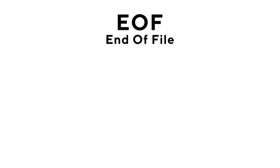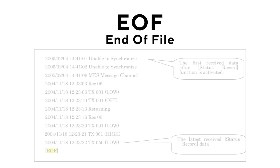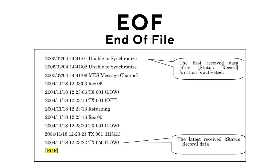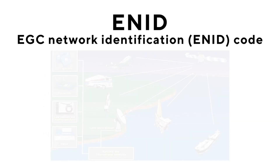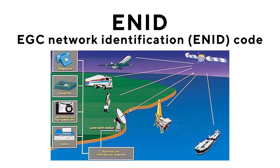EOF: End of File. ENID: EGC Network Identification — ENID Code.